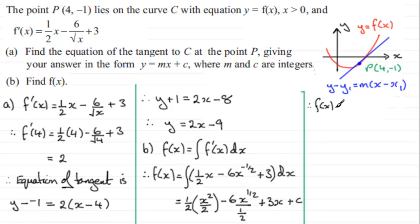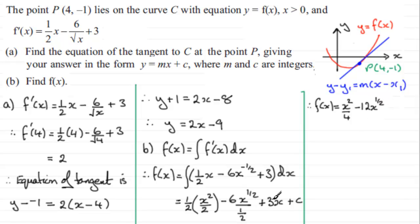Tidying this up: ½ of x² over 2 gives x²/4. Then dividing -6 by ½ — a half goes into 6 twelve times — so we get -12x^(½). Then +3x and +c. We've got to work out what that constant c is.